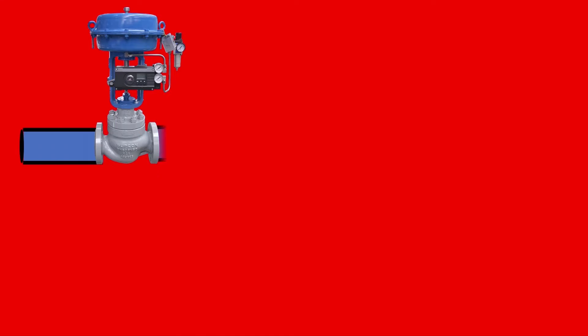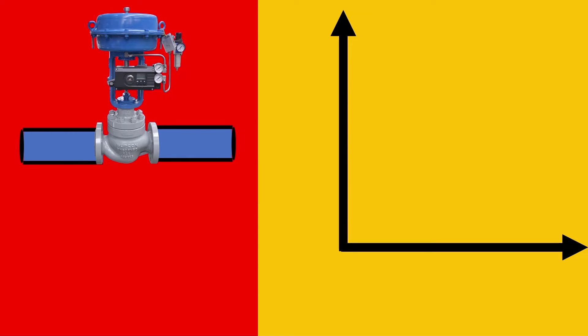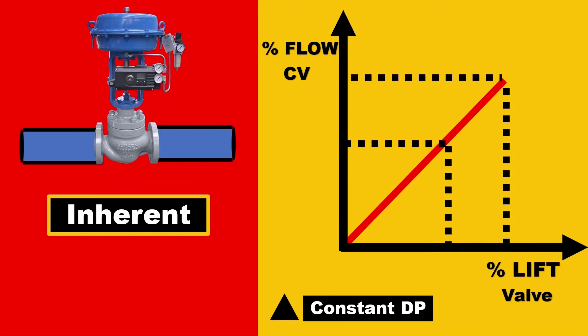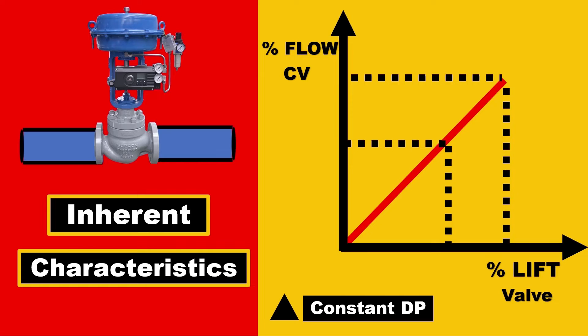When you have valves in a testing line and plot a curve with the x-axis showing percentage lift and the y-axis showing flow in CV, with constant DP, you get a very linear curve. At 100% valve lift, you get 100% flow. At 50% valve lift, you get 50% flow. These are called inherent characteristics of the valve.